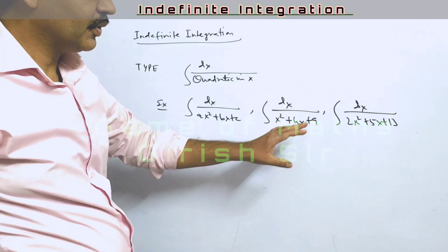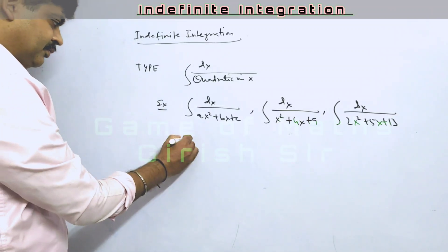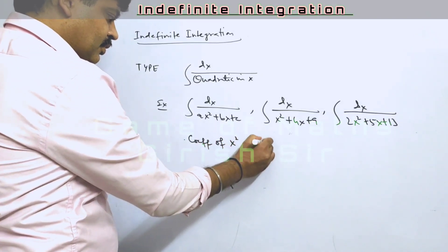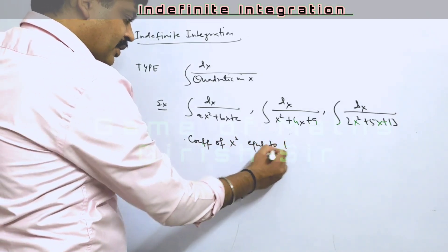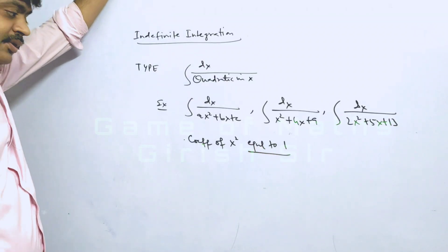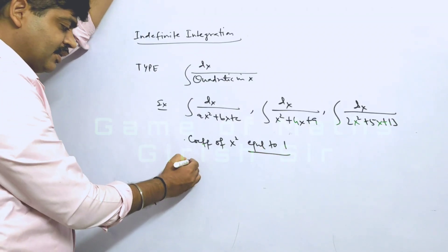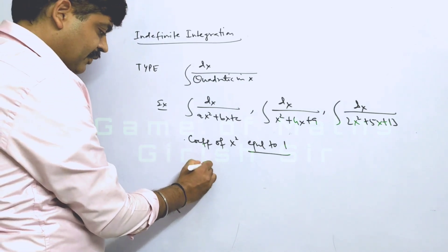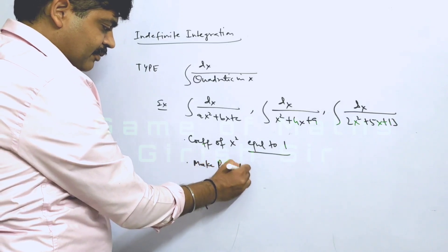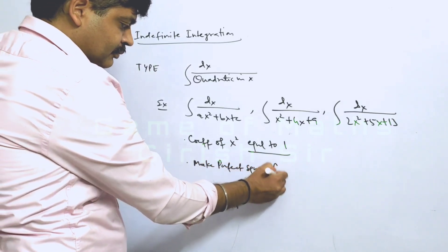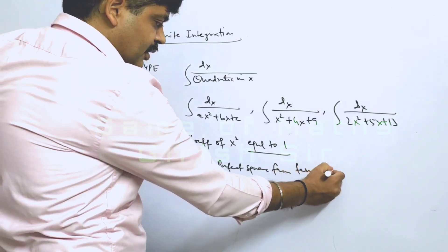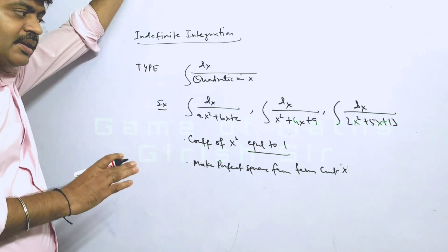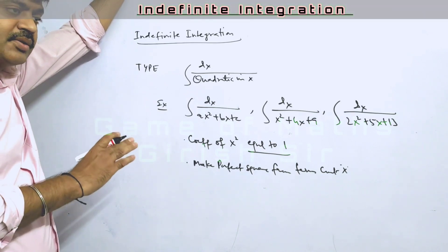Once you make the coefficient of x squared equal to 1, you will combine the terms which contain x and make a perfect square. Once you do this, your integral is going to change to a standard type.